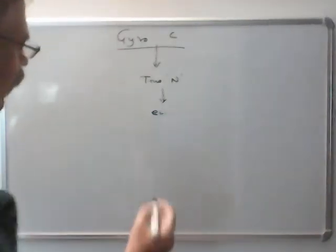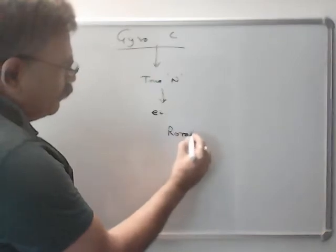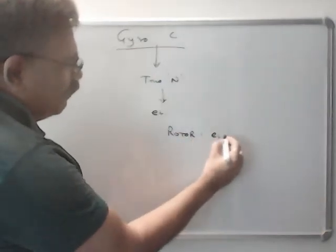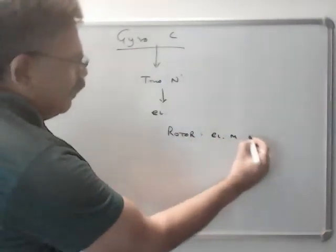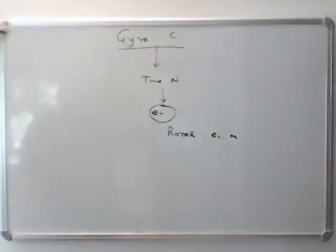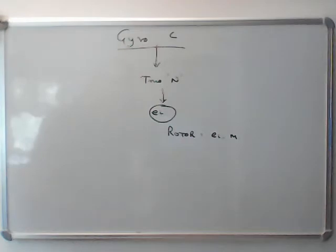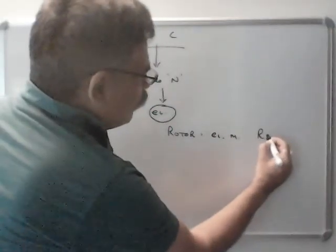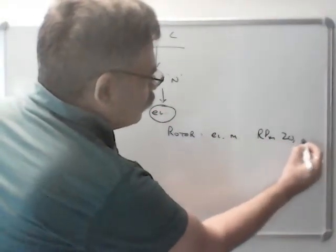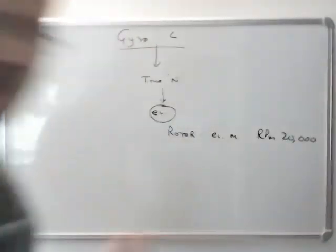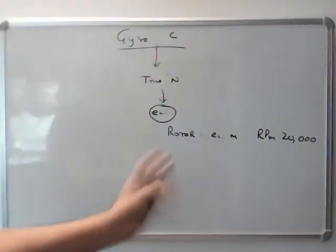Basically it has got a rotor which is like an electric motor driven by electricity. This rotor has got a high RPM of about 20,000 and it is free to move in any direction, 6 degrees of freedom, unrestricted.